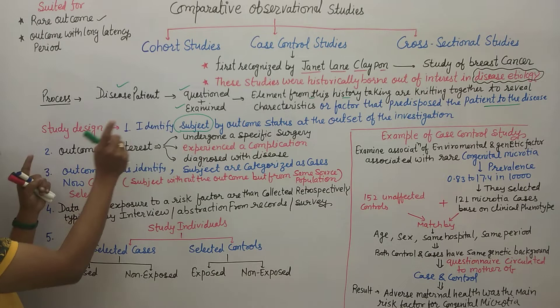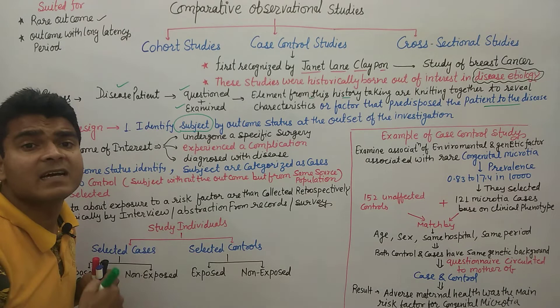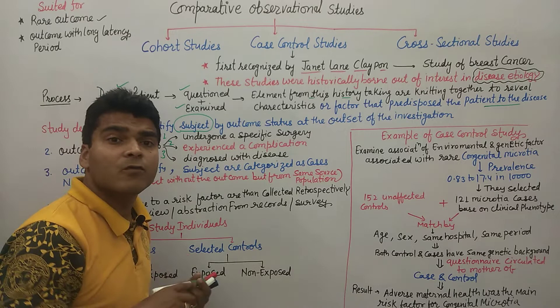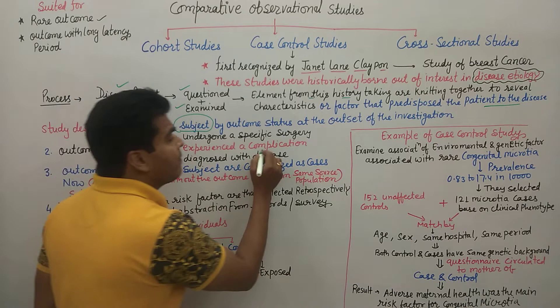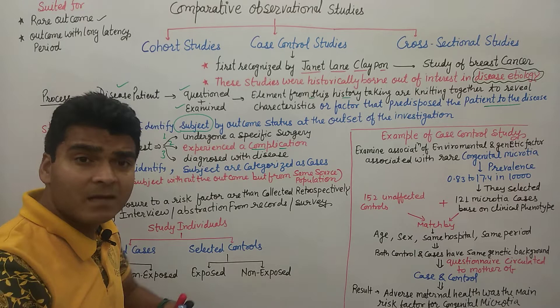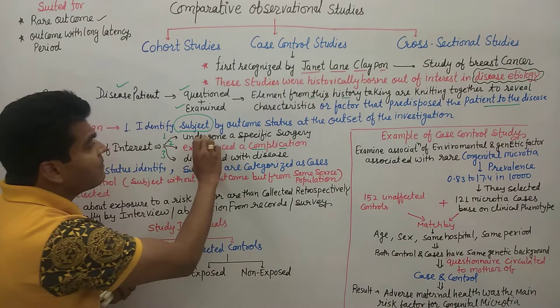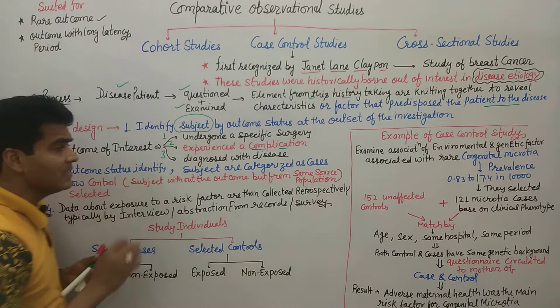The second step is the outcome of interest — which disease we are studying. This can be divided into three categories: first, the patient undergoes a specific surgery; second, the patient experiences a complication or has multiple diseases; and third, the patient is diagnosed with a disease. These are the three important outcomes of interest for case control studies.